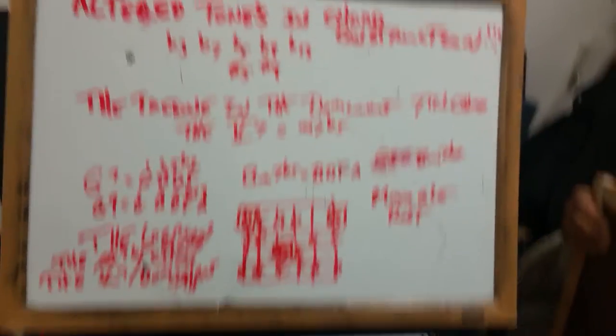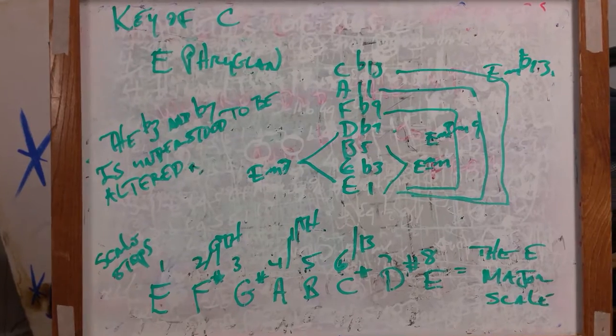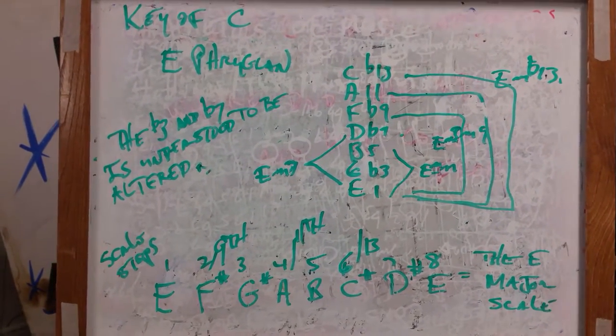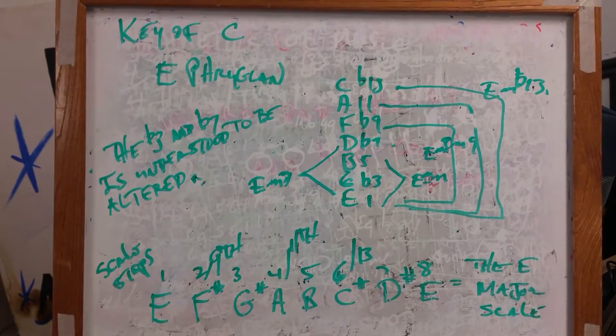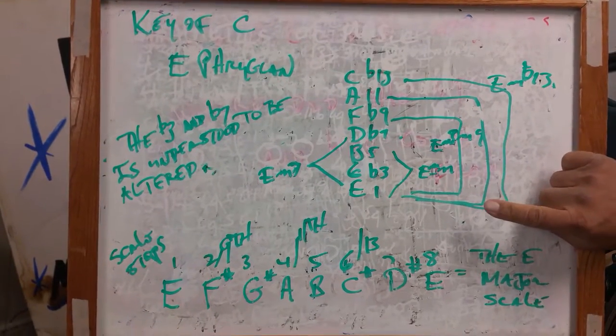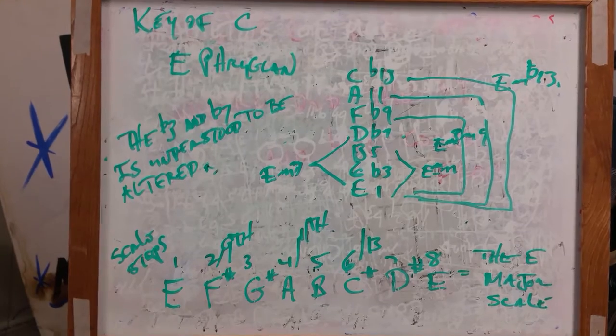Here's something else — key of C. In the key of C, what's the third degree? It's E Phrygian. This is a follow-up on the lesson I did for quantum instruction. Remember I read from the Bible: in the beginning, God created the heaven and earth. Well, in the key of C, the third degree is E. So the third degree is E minor or the E Phrygian.